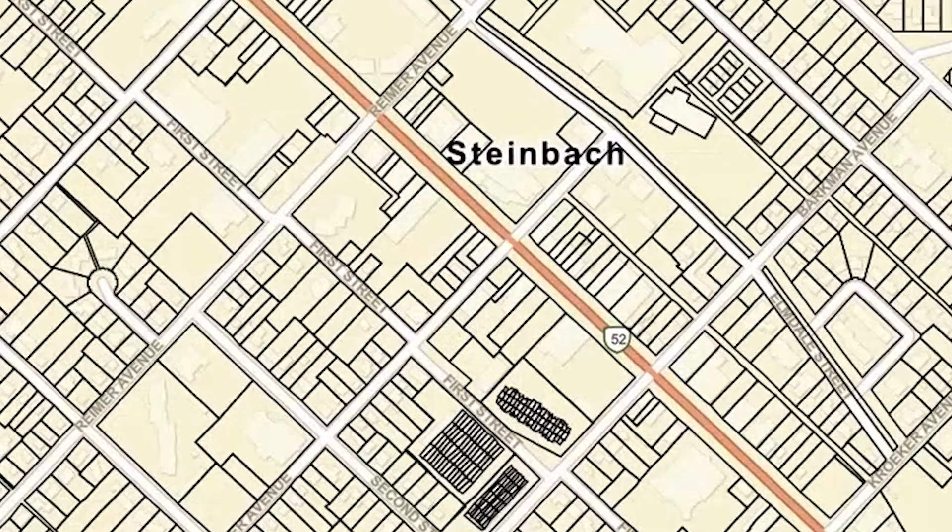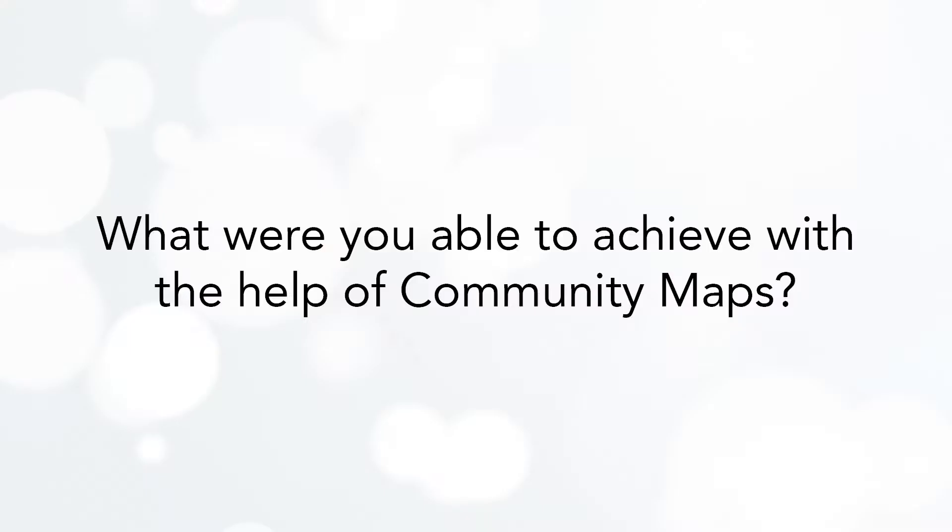Both in the initial share as well as when I forward updates. The layers we have shared include street centerlines, address points, building footprints, and parcel boundaries. I've made a concerted effort that when changes are made, those updates are sent in a timely manner to the community maps program.